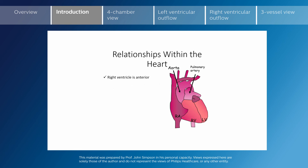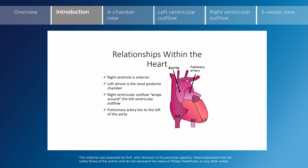So the right ventricle is anterior, the left atrium is the most posterior structure, and the right ventricular outflow tract is wrapping around the left ventricular outflow tract as we see here. The pulmonary artery is to the left of the aorta and slightly anterior to the aortic valve.